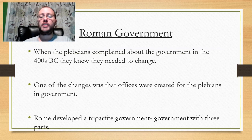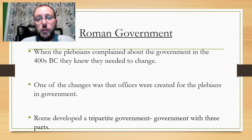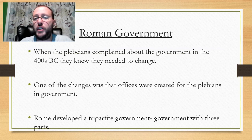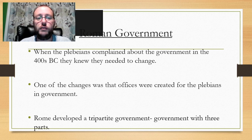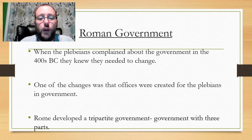Remember we talked last time about how the Patricians and the Plebeians kind of had a conflict, because the Plebeians outnumbered them by a lot. They started getting upset they weren't being represented in the government, so they said they were going to form their own government.